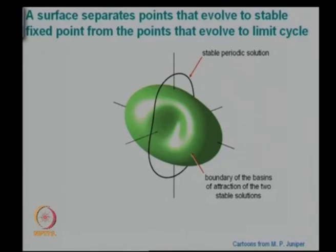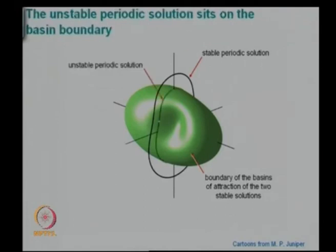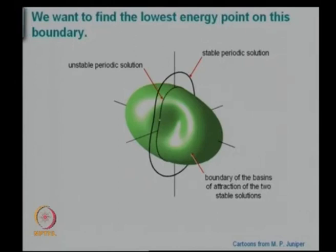There is a basin boundary which separates the two basins of attraction. The surface separates points that evolve to a stable fixed point from those that evolve to a stable limit cycle. There is also an unstable periodic solution on this basin boundary — you cannot stay there, because any slightest departure will take it out. We want to find the lowest energy point on this boundary — that is the idea.